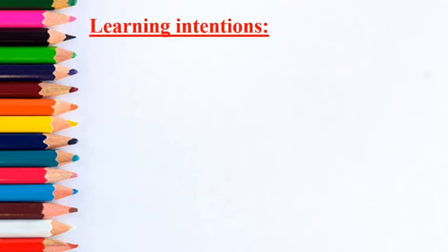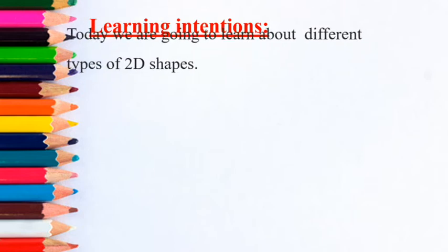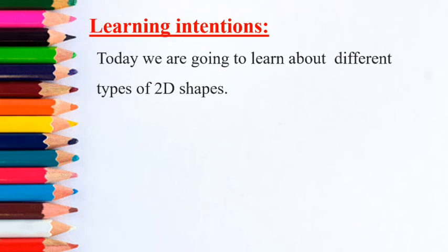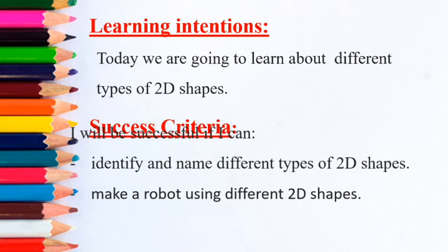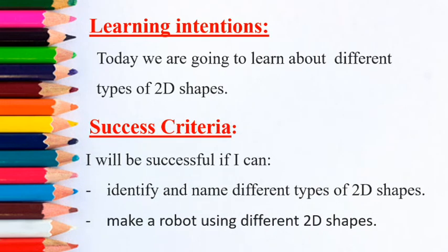Learning intention: today we are going to learn about different types of 2D shapes. Now let's look at our success criteria. You will be successful if you can identify and name different types of 2D shapes and make a robot using different 2D shapes.